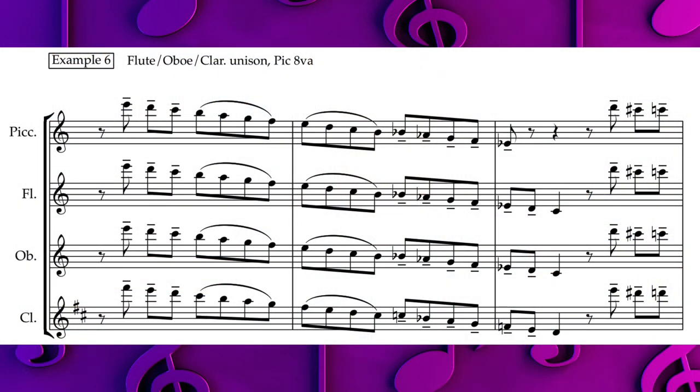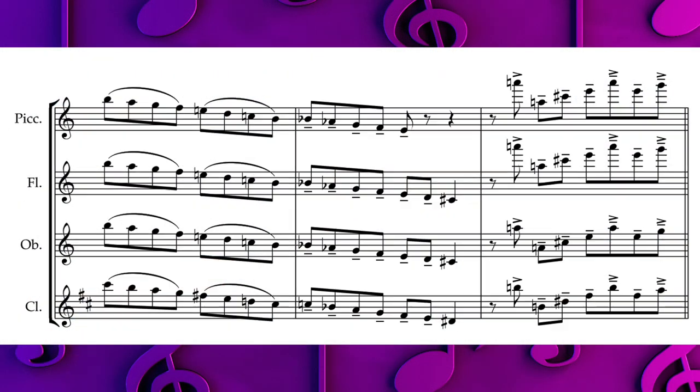Here I'm going for maximum power. The flute, oboe, and clarinet are in exact unison in the high register, and the piccolo is an octave higher. So it adds quite a bit of strength to that, and with accents especially it can really punch through a brass section.